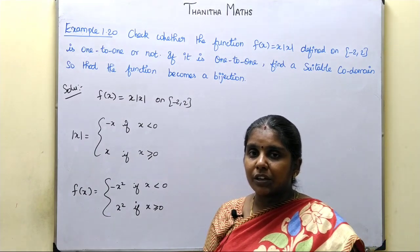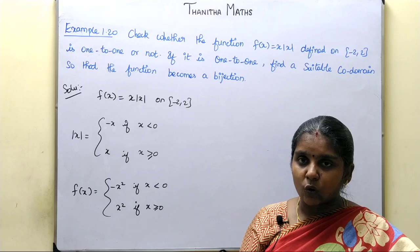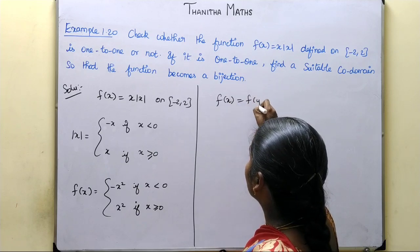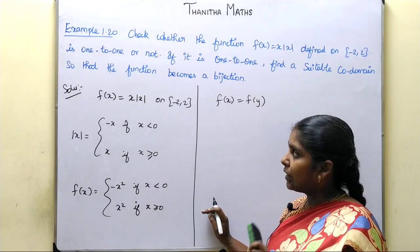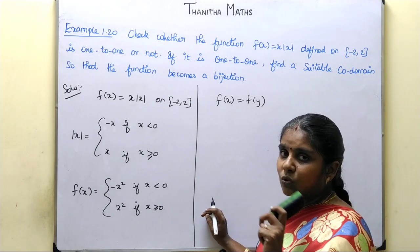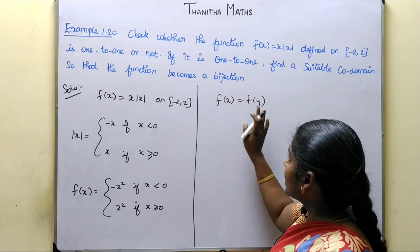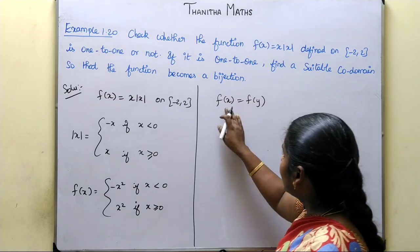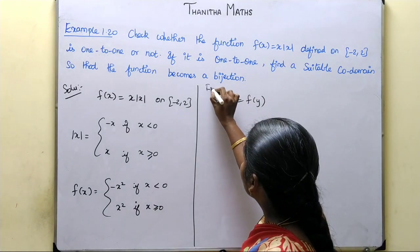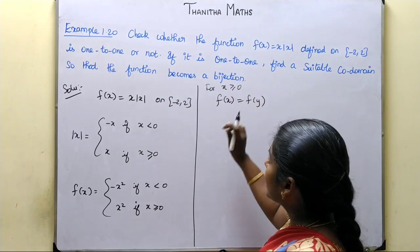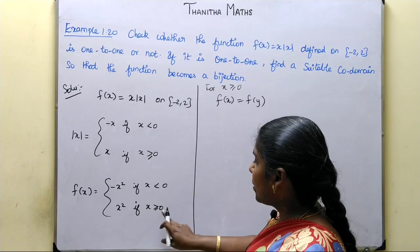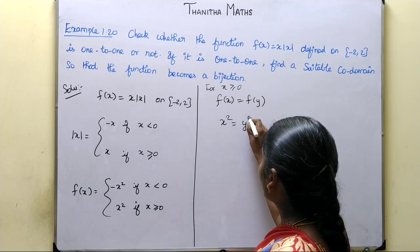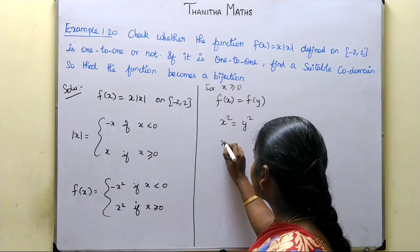To check one-to-one, if f of x equals f of y, then we must get x equals y. For x greater than or equal to 0, if f of x equals f of y, then f of x equals x squared. So x squared equals y squared.